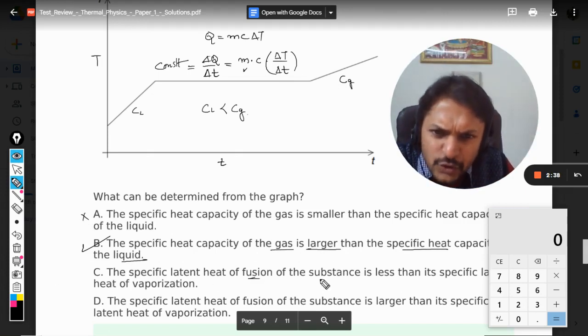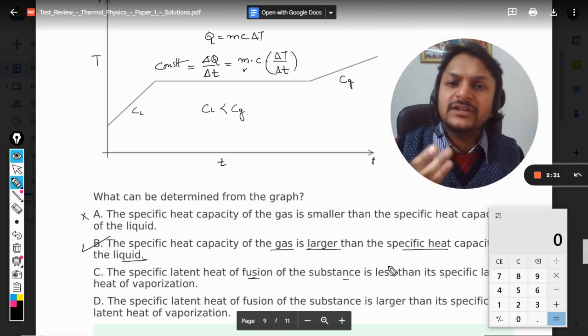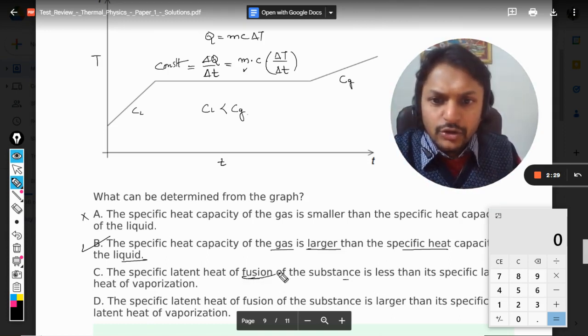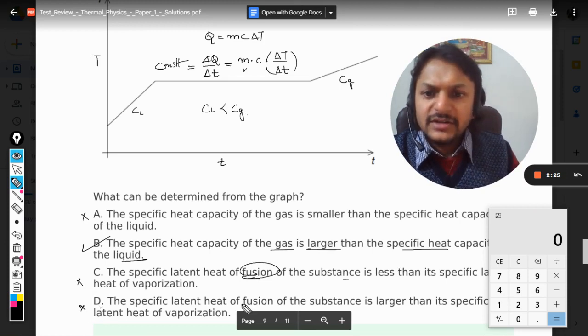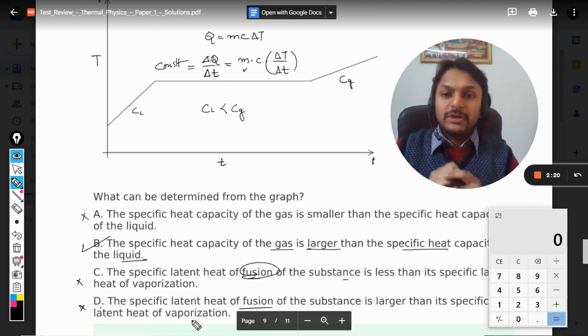And what about C? The specific latent heat of fusion of the substance is less than the specific latent heat of vaporization. But we are only concerned with vaporization, we are not talking about fusion. So these are not right. Here also there is fusion, so it means that no doubt our answer should be B.